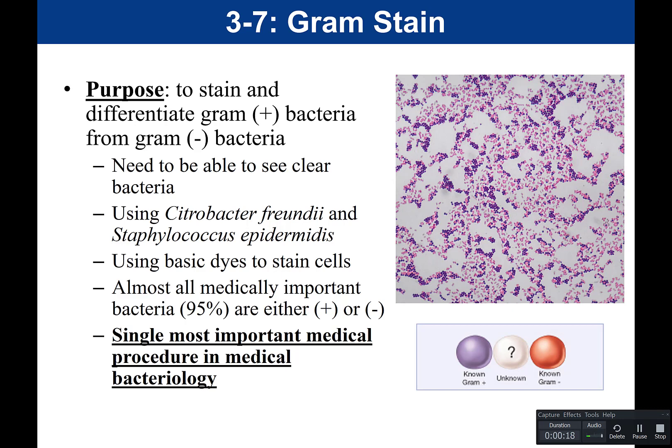When we say differentiate, we're referring to the fact that the gram stain is a differential stain. During the staining procedure, it will allow us to differentiate between gram-positive and gram-negative, which are two different types of bacteria. Gram-positive and gram-negative doesn't refer to the charge on the cell — it's simply a designation for a type of bacterial cell wall.